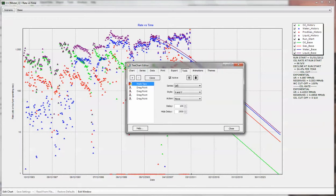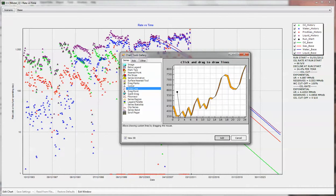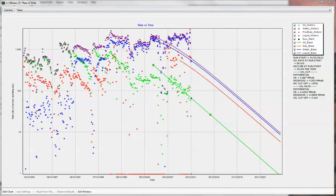...being able to draw lines, which can be useful if you want to compare declines between different runs. Okay, well thank you.